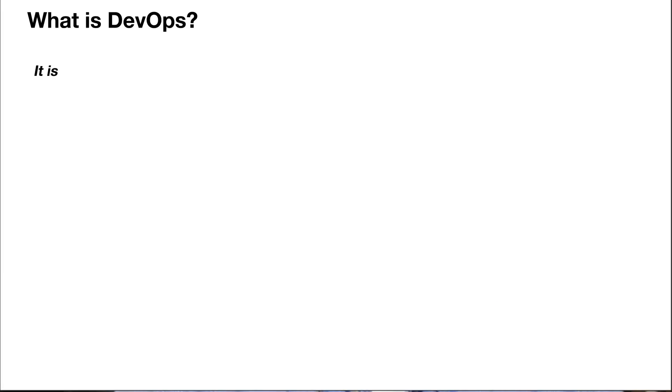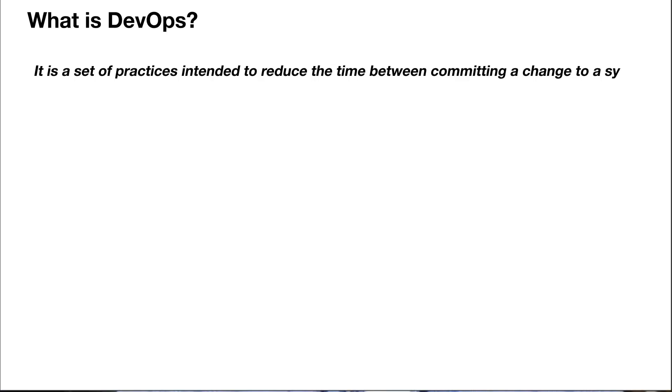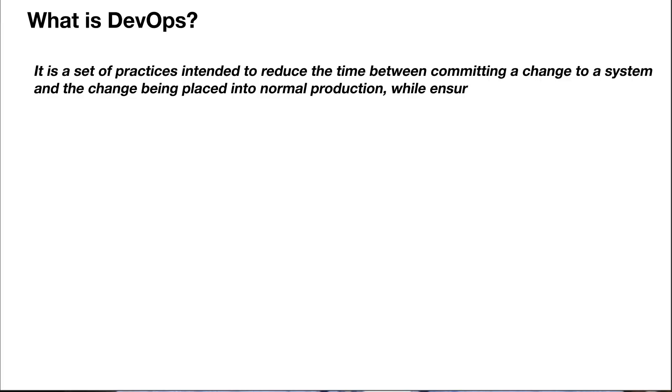DevOps is a set of practices intended to reduce the time between committing a change to a system and the change being placed into normal production while ensuring high quality. So it seems like DevOps is all about enhancing the process that has been already running for several years, perhaps several decades now — software development.